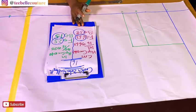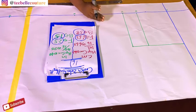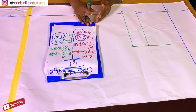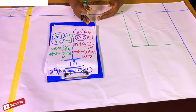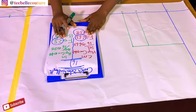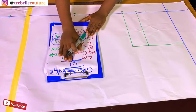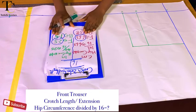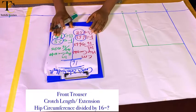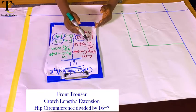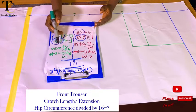If you watched my previous video on how to calculate your crotch extension, I did five different methods. Out of those methods I picked the hip-divided-by-16 method. I'm using this because I'm using an Ankara material which is not stretchy, so I need more ease around my crotch extension — that is the main reason why I picked 16 instead of 20.